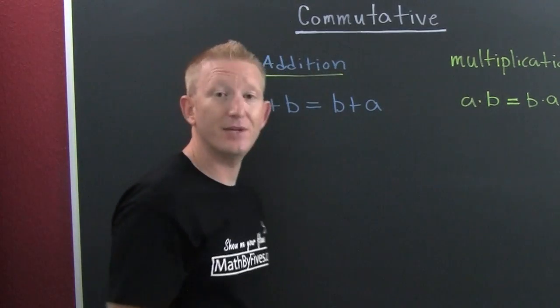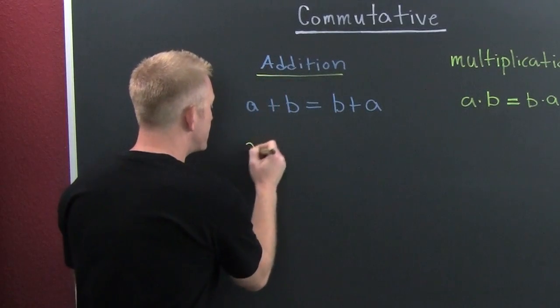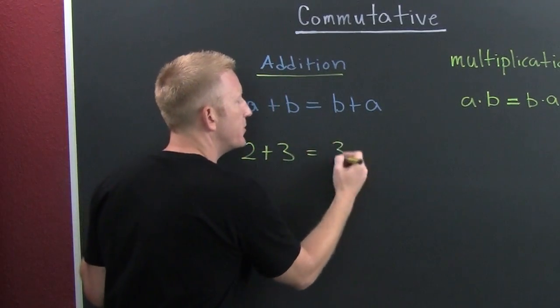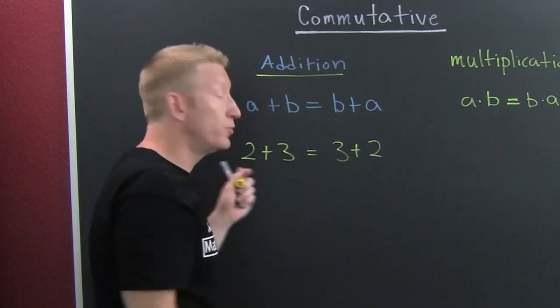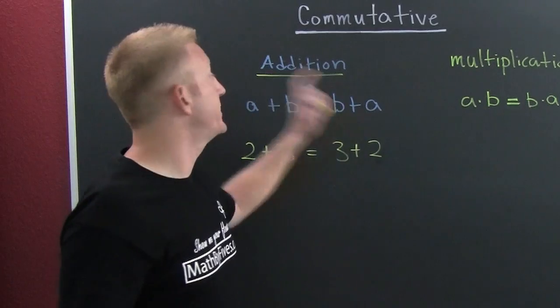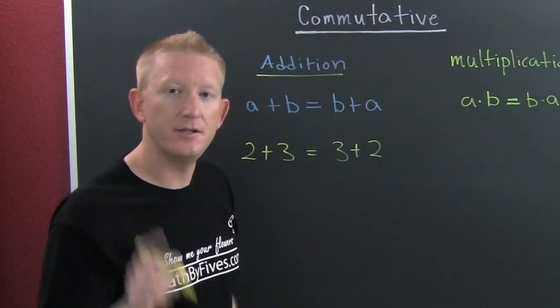For the commutative property of addition, what do we want to do? That says we can add numbers in any order. Picture this: two plus three, is that the same as three plus two? Oh, here that's five and there that's five.